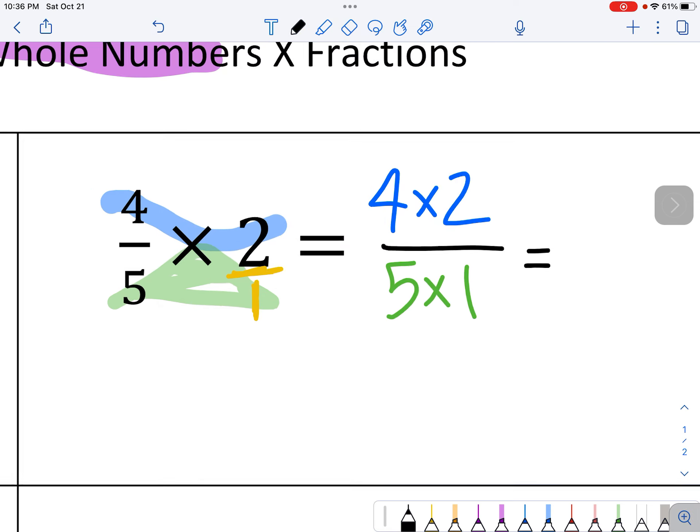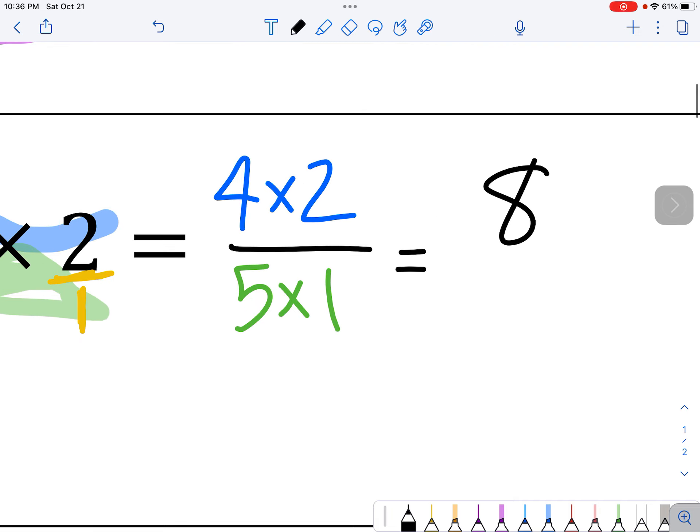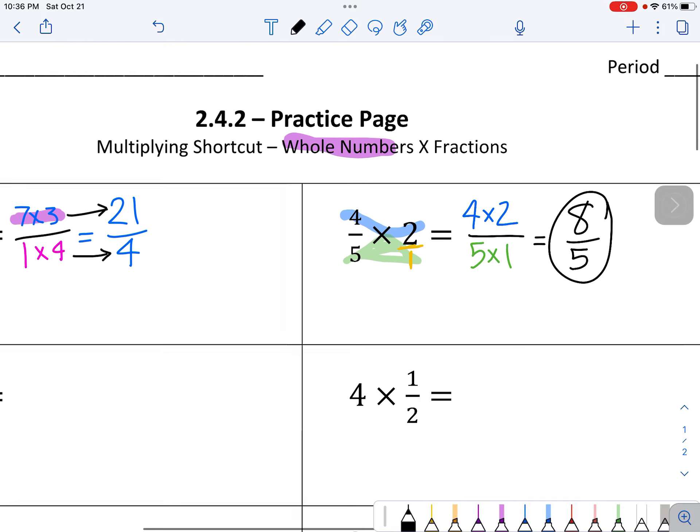And then we'll just actually do that work. 4 times 2 is 8, 5 times 1 is 5. And you can leave your answer just like that, 8 fifths.